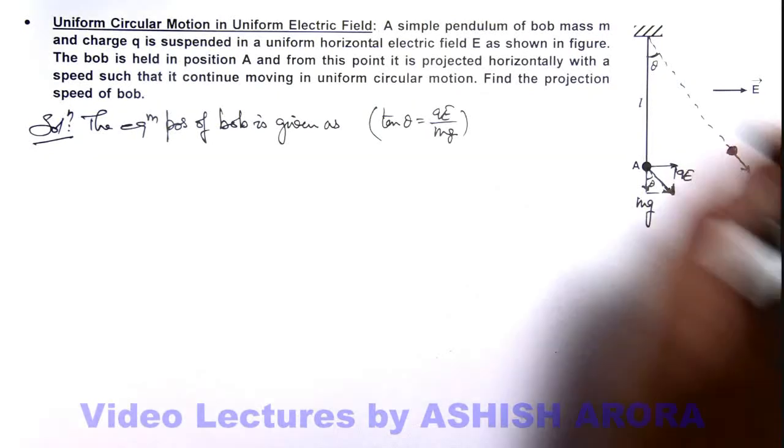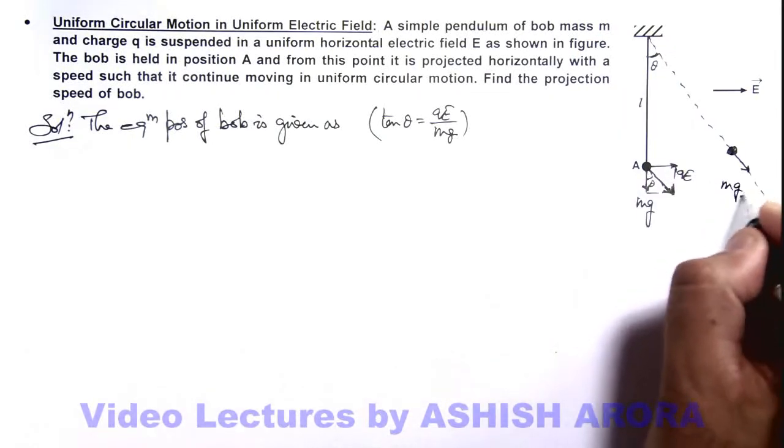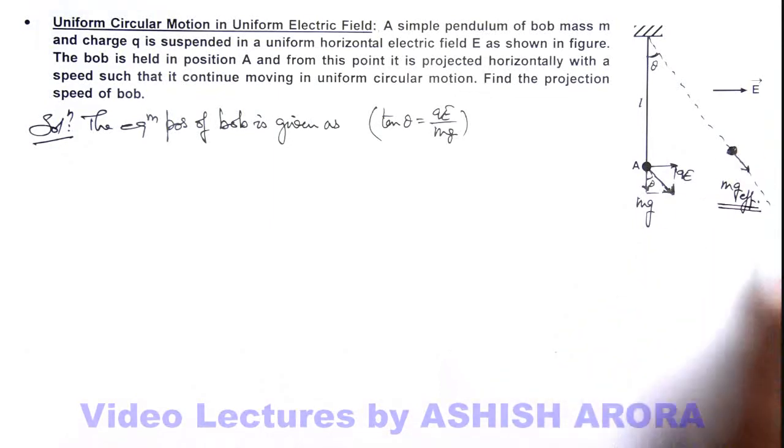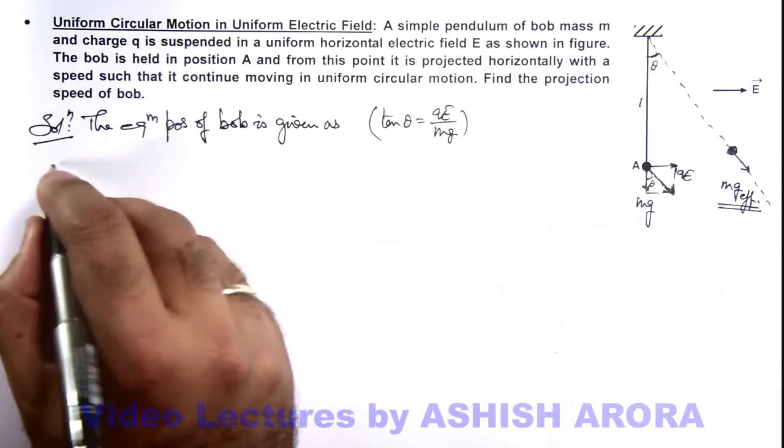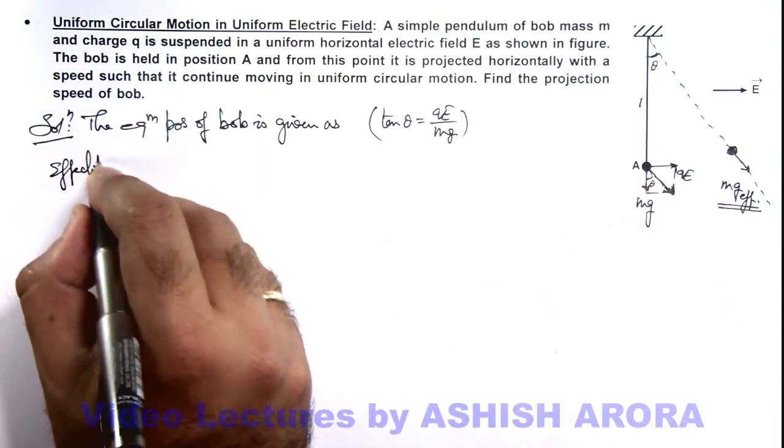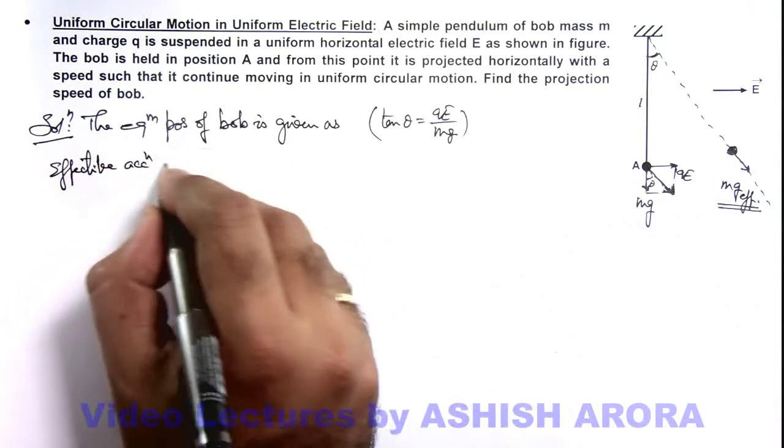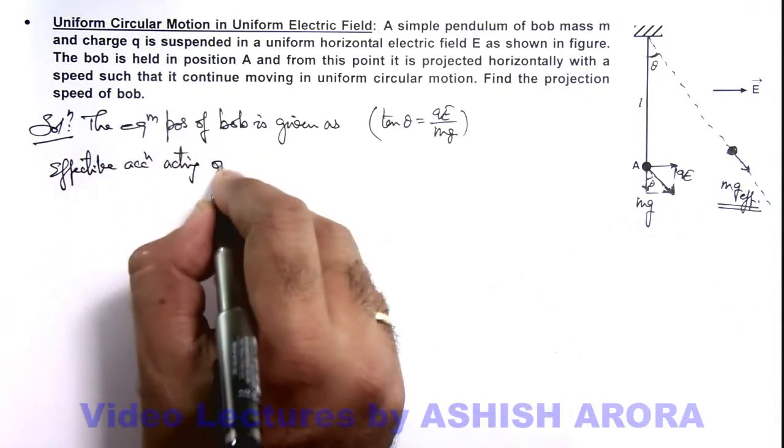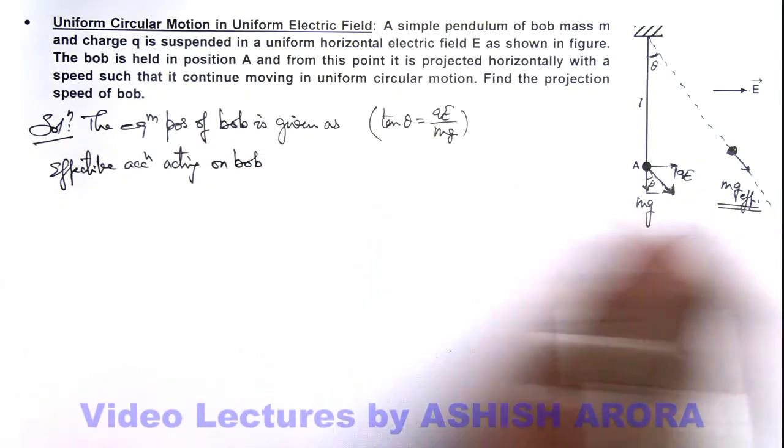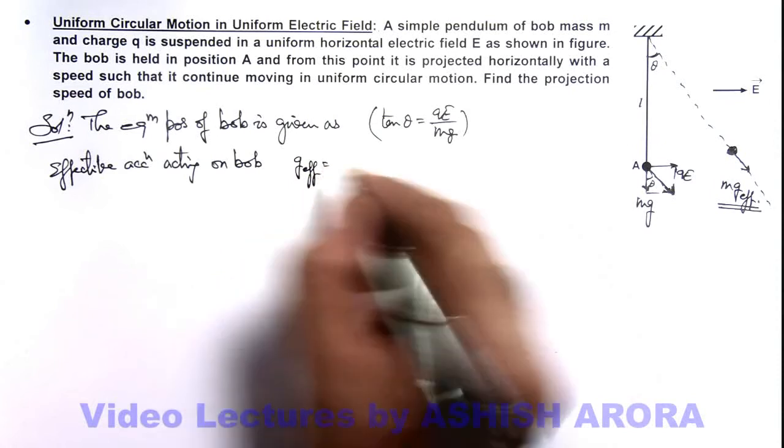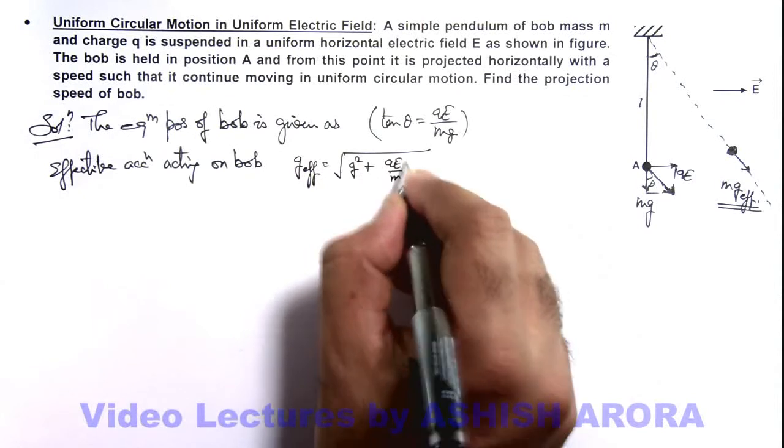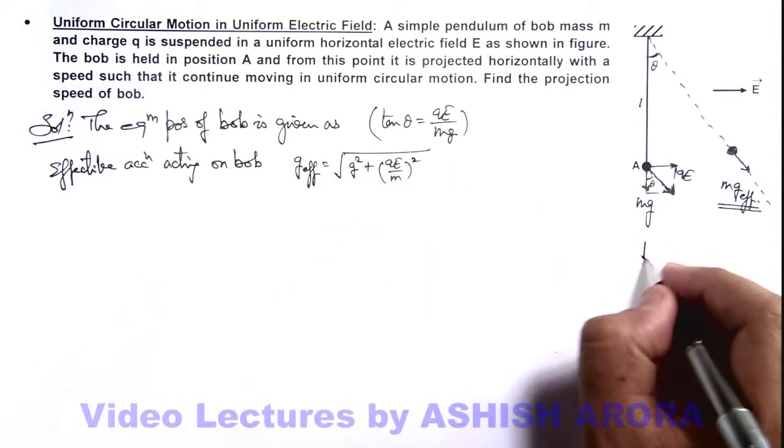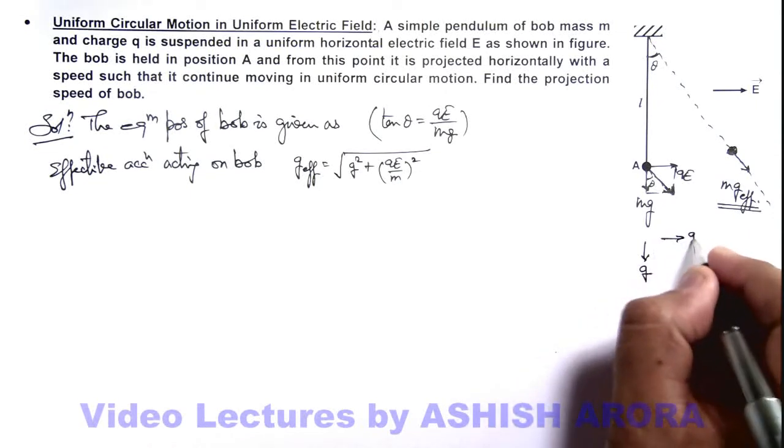And the resulting force acting on it can be written as m g_effective, where g_effective is the effective gravity acting on it or the resulting force acting on it, which is the resultant of these two perpendicular forces acting on it. So we can also write the effective acceleration acting on bob, which is due to both gravity and electric force, can be written as g_effective equals square root of g squared plus (qE/m) squared, as in downward direction acceleration acting on it is g and in horizontal direction it is qE by m.